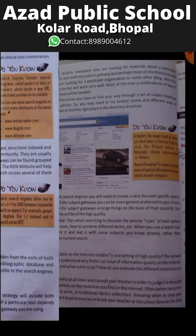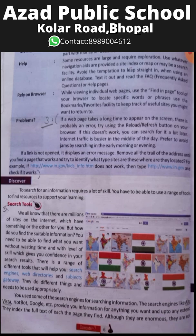Fifth question: write a short note on searching tools. The answer: we all know that there are millions of sites on the internet which have something or the other for you, but how do you find suitable information? You need to find what you want without wasting time and with a level of skill that gives you confidence in your search results. There is a range of different tools — search engines, web directories, and subject gateways. They do different things and need to be used appropriately.